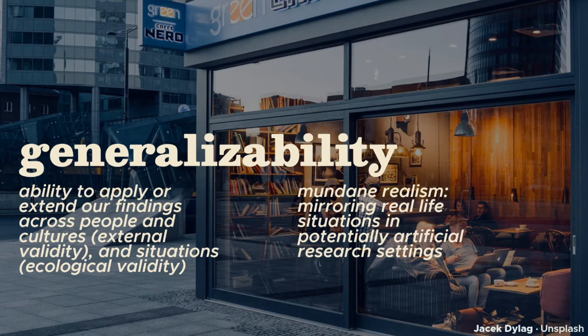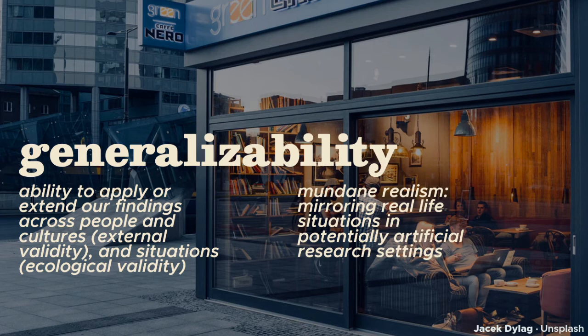Generalizability manifests in two ways. External validity is our ability to generalize findings across people and even cultures, beyond the groups and samples directly included in the study, and this is possible through random, representative sampling. Meanwhile, ecological validity concerns our research design — it is about the generalizability of our findings to real-life settings across time and situations. Together, these two standards emphasize how our samples, depending on size and demographic features, as well as our research design, can determine what we can and can't conclude about human nature.